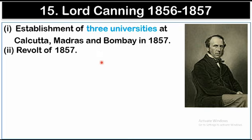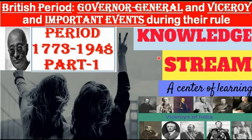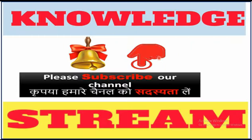The fifteenth and last Governor-General in this series was Lord Canning, whose tenure was from 1856 to 1857. The post of Governor-General was changed to Viceroy after the Government of India Act. The Revolt of 1857 occurred under his rule. An important event under his rule was the establishment of three universities at Calcutta, Madras, and Bombay in 1857. These were the Governor-Generals and the important events during their tenures. In the next lecture, we will discuss Viceroys and some important events during their tenures. Please subscribe to our channel and press the bell button so you are notified whenever a new video is uploaded. Thank you very much.